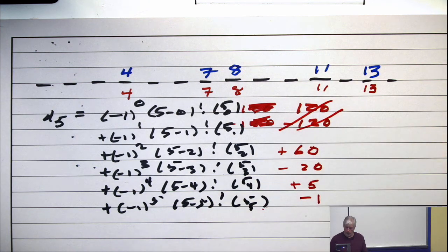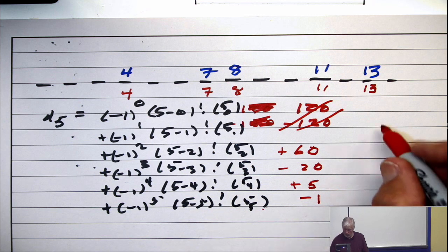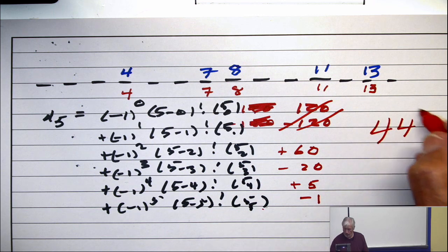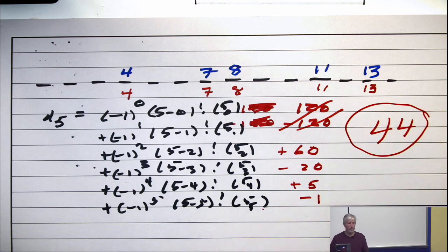Now, these two terms cancel, so I can do this, 60 minus 20 is 40, plus 5 is 45, minus 1 is 44, so answer 44. It wasn't so bad, was it?